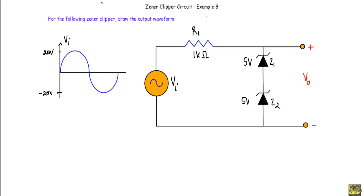In this video I will show you another example of a general clipper circuit. For the following general clipper, draw the output waveform. This is our given circuit. We are applying a sinusoidal input waveform with positive peak +20V and negative peak -20V. We have to draw the output from the output terminals. We have Zener diodes Z1 and Z2 connected in series, with Vz1 equal to Vz2 equal to 5V. The built-in potential of the Zener diodes will be assumed as 0.8V.